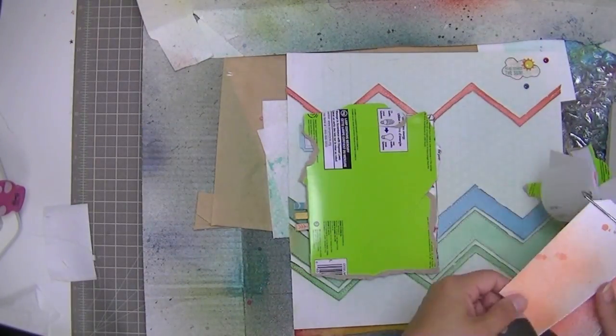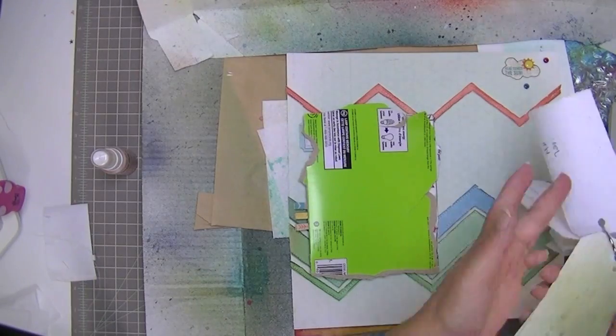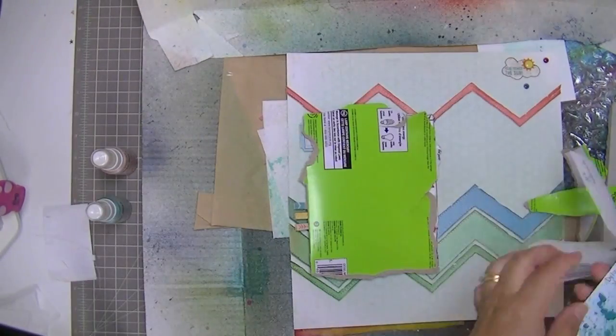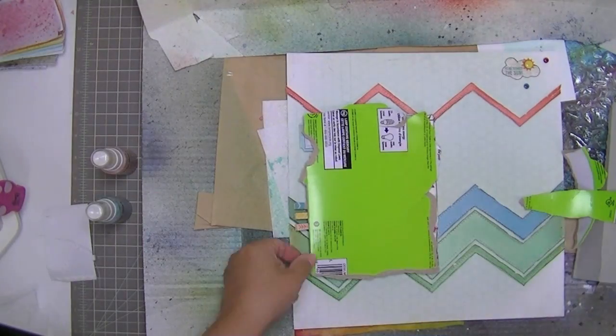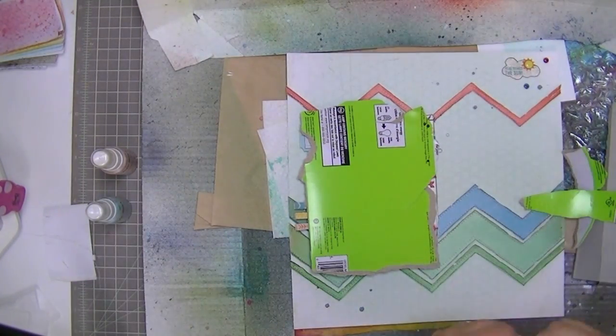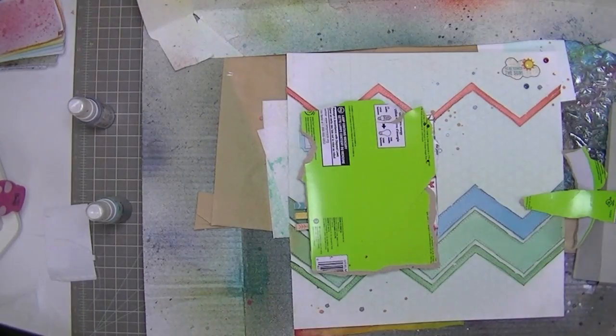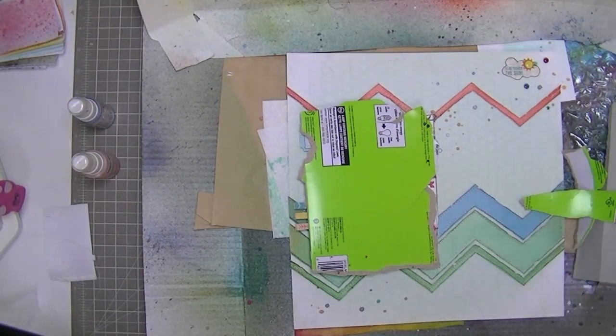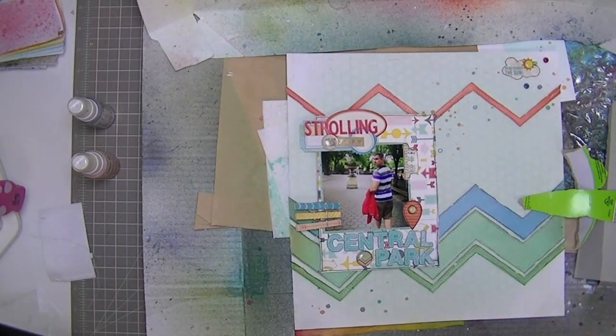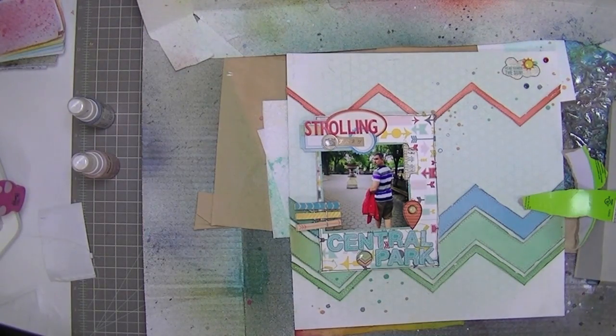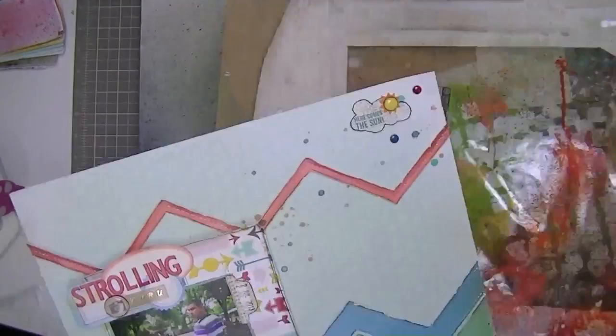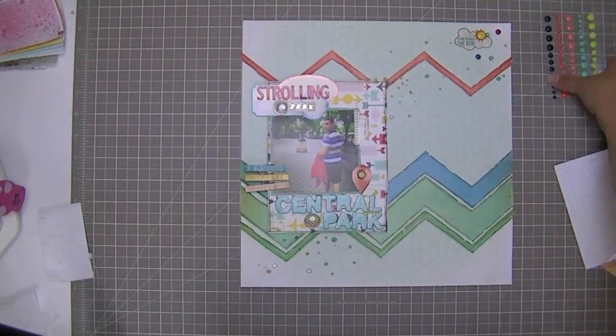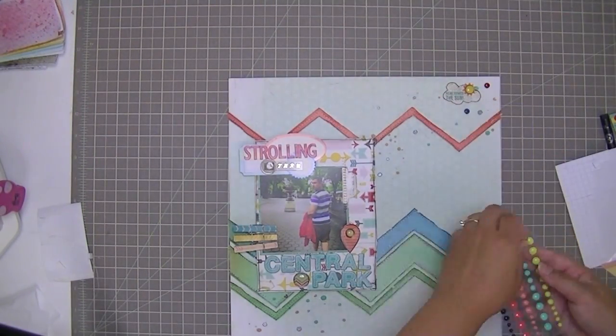And now I'm just masking off my main cluster of photo and title and I'm going to pick out some Mr. Hueys. I'm using Cameo and Seafoam and silver. And I'm being fairly generous with my sprinkles today. I came back from vacation and I'm just wanting to splatter stuff. It's been a while since I've been in my scrap room.